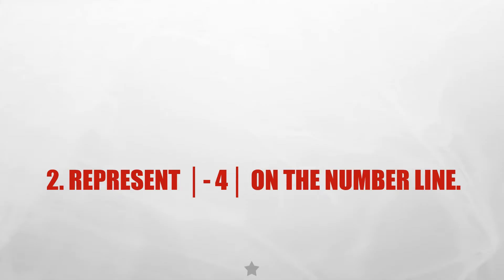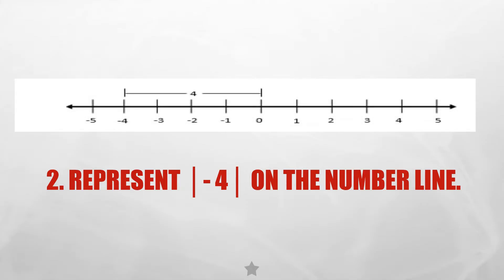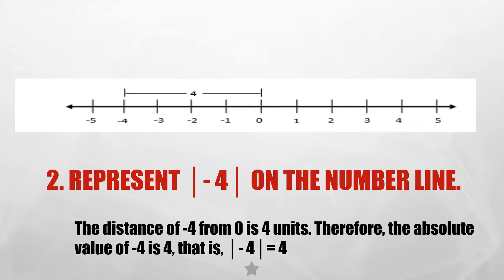Represent the absolute value of negative 4 on the number line. We have a number line. If we talk about negative 4, we're going to the left of zero. When we say absolute value, it disregards the direction. So the distance of negative 4 from zero is 4 units. Therefore, the absolute value of negative 4 is equal to 4.